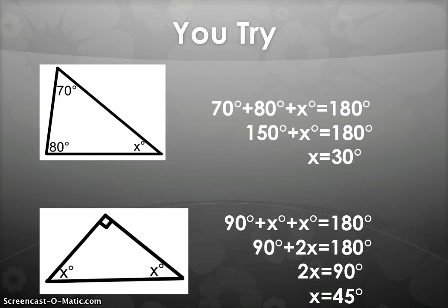Now some you tries. Let's set it up the same way. So I'll walk around while you try these on your own, and then just check your answer as soon as you complete it. This first one here, we have 70 degrees plus 80 degrees plus x degrees equals 180 degrees. Add 70 and 80, giving you 150, plus x equals 180. That leaves you with x being 30 degrees. And then you can check that also.